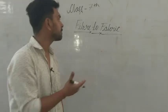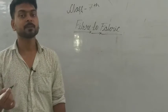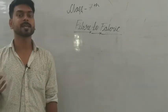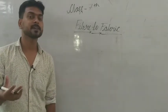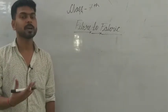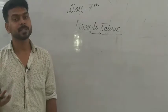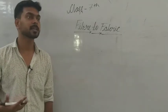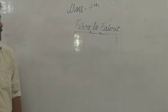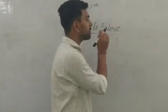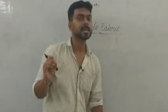In Class 7, you are going to study Fiber to Fabric, and in this chapter you are going to study animal fibers — specifically wool and silk. So in this chapter, you will mainly study animal fibers: wool and silk.